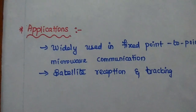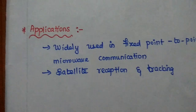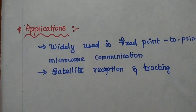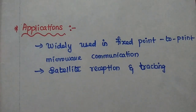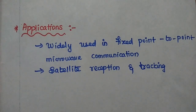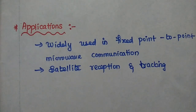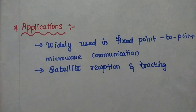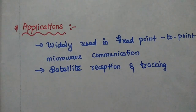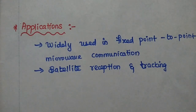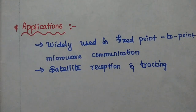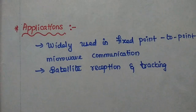The Cassegrain feed system is mainly used in fixed point-to-point microwave communication, satellite reception, and tracking systems. These are the major applications of this Cassegrain feed system. The aperture blockage can be avoided by using an offset reflector system.